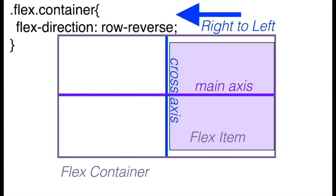When we set flex-direction to row-reverse, our main axis is horizontal and our cross axis is vertical. The flow of our flex items will be the reverse of row, so this time going from right to left along the main axis.